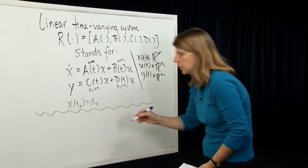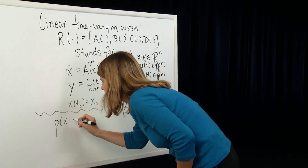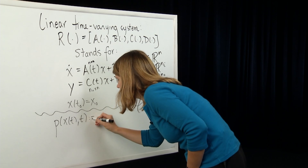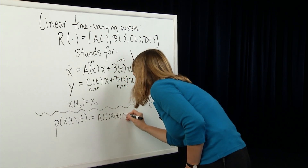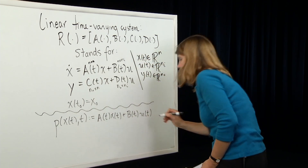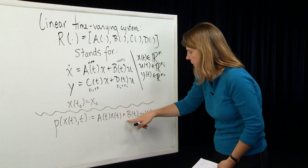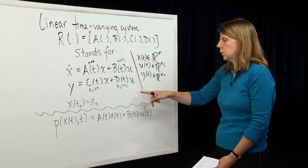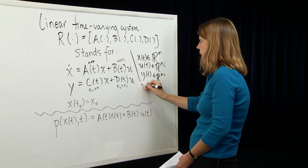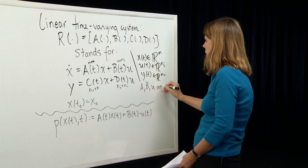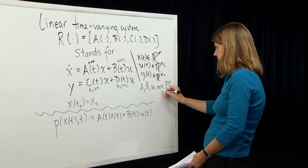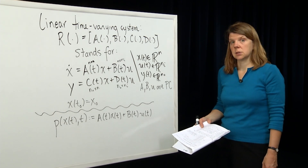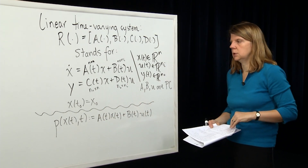If we define p(x, t) = A(t)x(t) + B(t)u(t) as the right-hand side of the differential equation, then if A, B, and u are piecewise continuous functions of time, p itself is a piecewise continuous function of time. So let's include that in our definition — we require A, B, and u to be piecewise continuous in time. Now let's look at Lipschitz continuity — whether p is Lipschitz continuous in the state x.